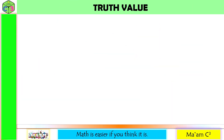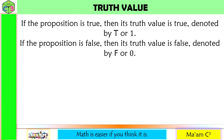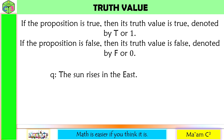Let us talk about truth value. If the proposition is true, then its truth value is true, denoted by capital T or 1. If the proposition is false, then its truth value is false, denoted by capital F or 0. For example, q is the proposition 'The sun rises in the east.' This is a declarative sentence. Is this true or false? This is true. Therefore, this is a proposition whose truth value is true, capital T.